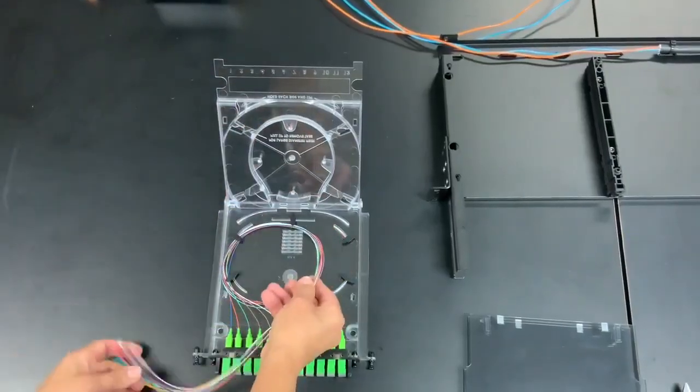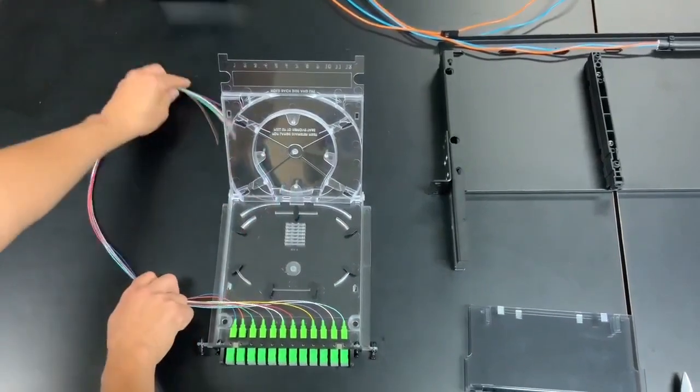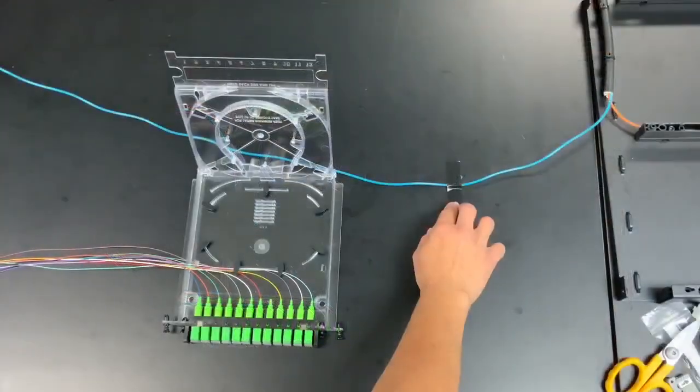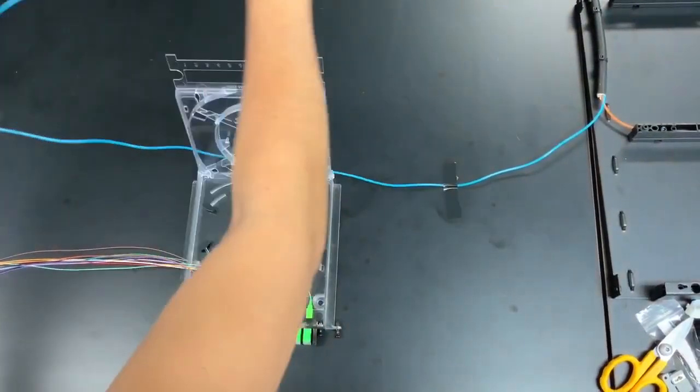Now unwind the 900 micron pigtails completely and set them outside of the cassette. Secure the buffer tube to your work area so that it routes into the top of the cassette from a 90 degree angle.